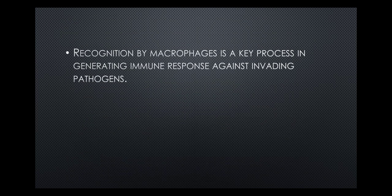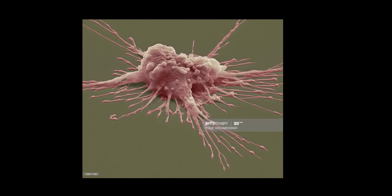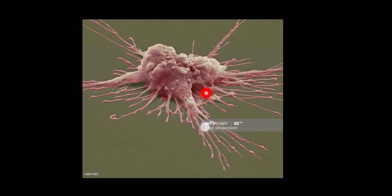Recognition by macrophages is a key process in generating an immune response against invading pathogens. Previous studies have focused on recognition of pathogens through surface receptors present on the macrophages' surface. These macrophages use their finger-like processes to continuously monitor and attack an organism, catch it, pull it in, and engulf it like an octopus.